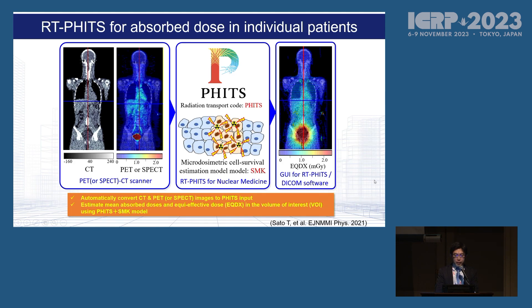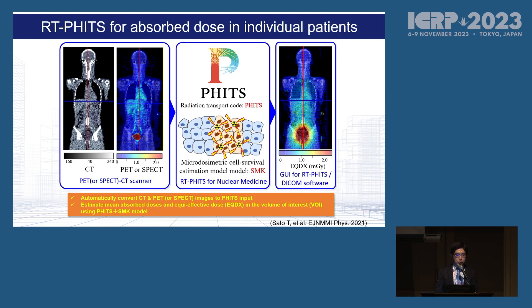We also developed imaging software in collaboration with Dr. Tatsuhiko Sato, the fourth speaker of this session. He used RT-FITS to generate an individual absorbed dose map. This is an equi-effective dose map generated from the patient's CT and SPECT. By using this technique, we can visualize absorbed dose in organs — both normal organs and tumors.